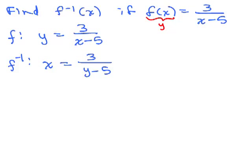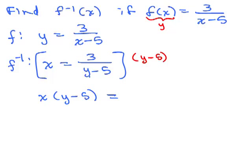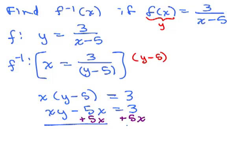There's more than one way to solve for y. I'll multiply both sides by y minus 5. On the left we get x times the quantity y minus 5, and on the right the y minus 5 cancels, leaving 3. Expanding gives xy minus 5x equals 3. Adding 5x to both sides gives xy equals 5x plus 3. Finally, dividing both sides by x gives y equals 5x plus 3 over x.